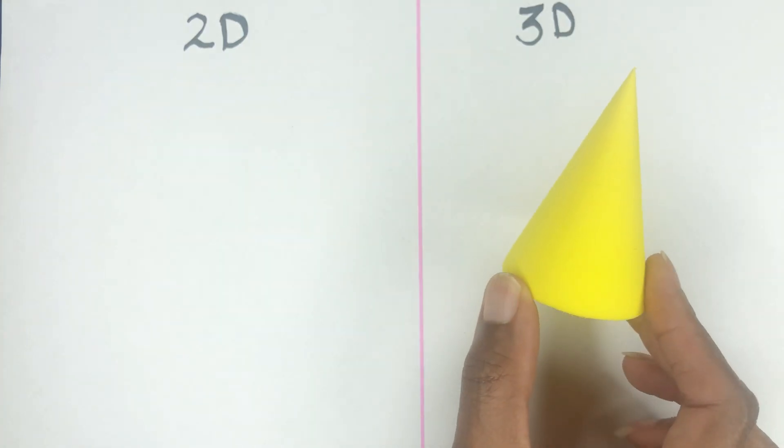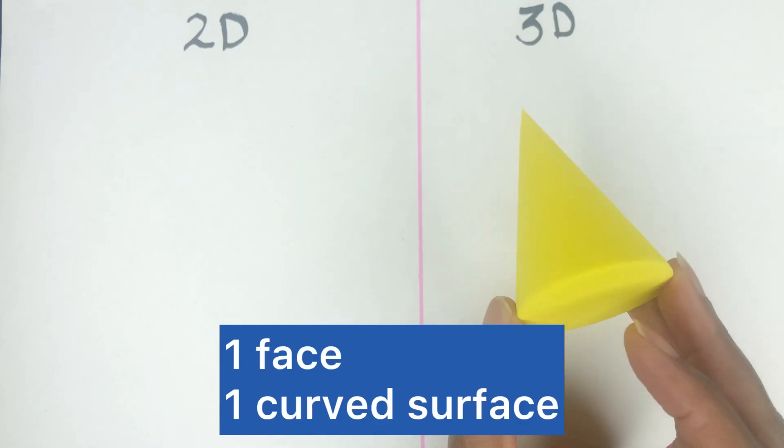The cone. What are the properties of that? It has one face, which is the flat surface underneath, and one curved surface all around.